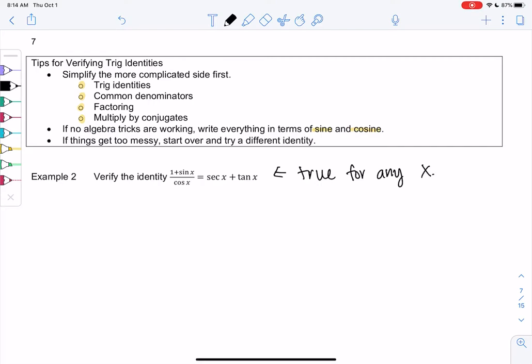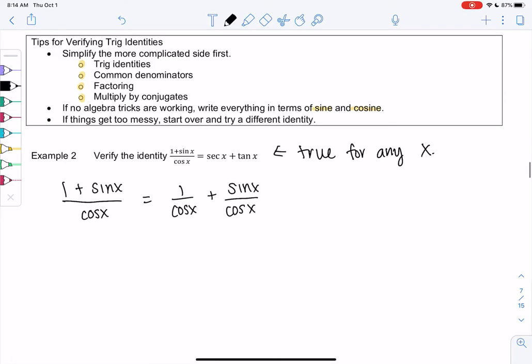I'm going to start with the left side. It looks messier to me because it has a fraction. I've done this before, so I might choose the right path a little faster than you. It's really easy to choose the wrong path sometimes. I noticed a fraction, so we can split a fraction. One plus sine over cosine is one over cosine x plus sine over cosine x.